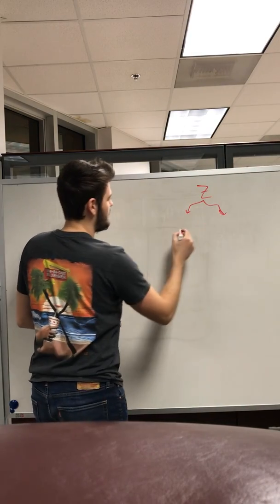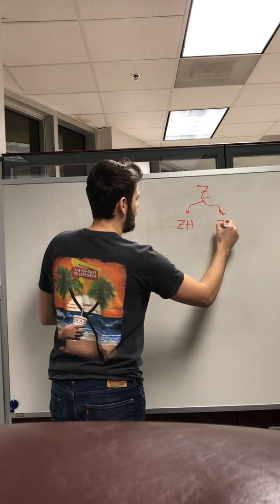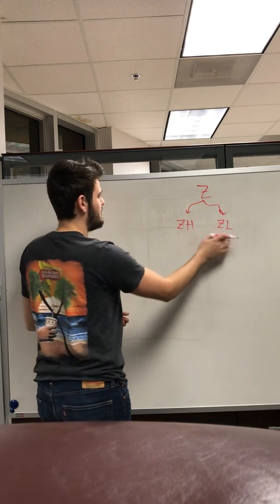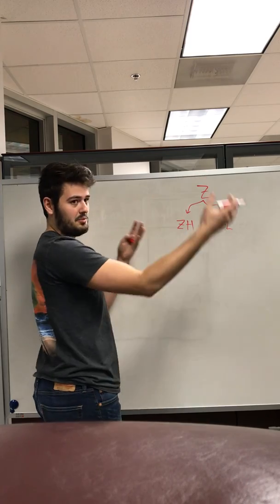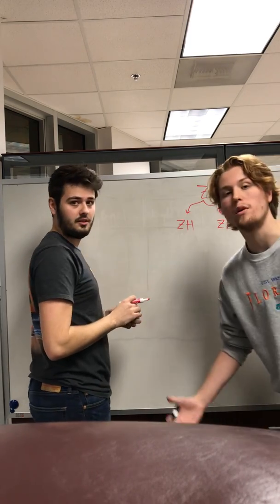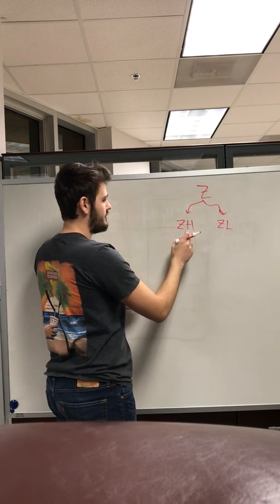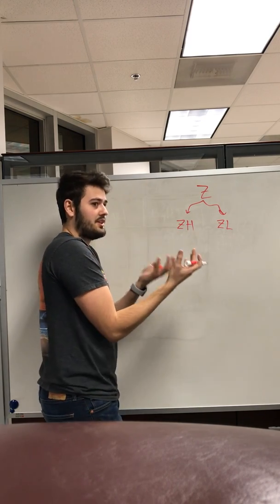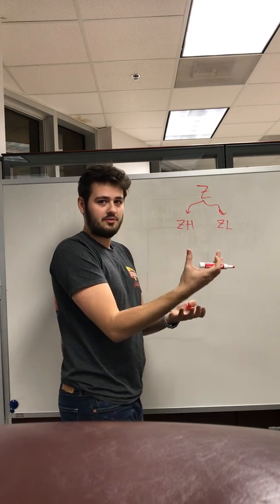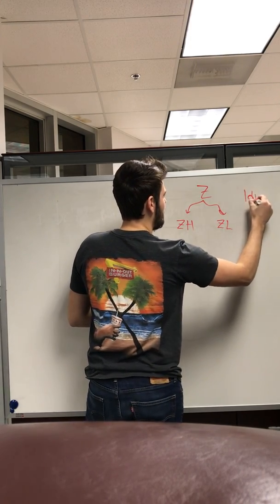The Z pointer consists of two bytes or registers: Z low and Z high. Each one is a single byte, and Z is a 16-bit pointer overall. The same structure applies to the X and Y pointers as well. In order to actually start getting something, we have to load Z with some value.